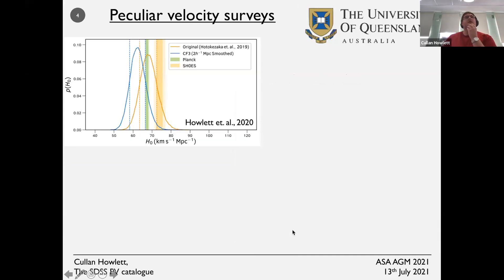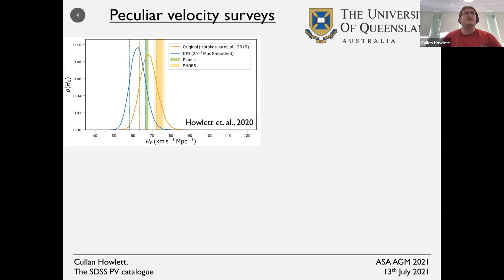So why do we care? Peculiar velocity surveys are useful for transient corrections. When making Hubble diagrams using supernovae or gravitational waves, peculiar velocities turn out to be a very large source of statistical and potential systematic error. This plot is from a paper showing that the peculiar velocity for the binary neutron star merger was a very important statistical and systematic effect for the Hubble parameter obtained from that data.